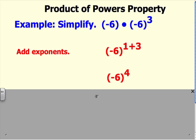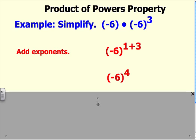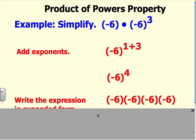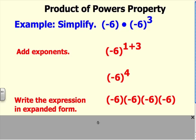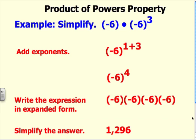Now in class, I've taught you how to expand this, so go ahead and expand it so you understand what that means. The product of negative 6 times negative 6 times negative 6 times negative 6 is 1,296.